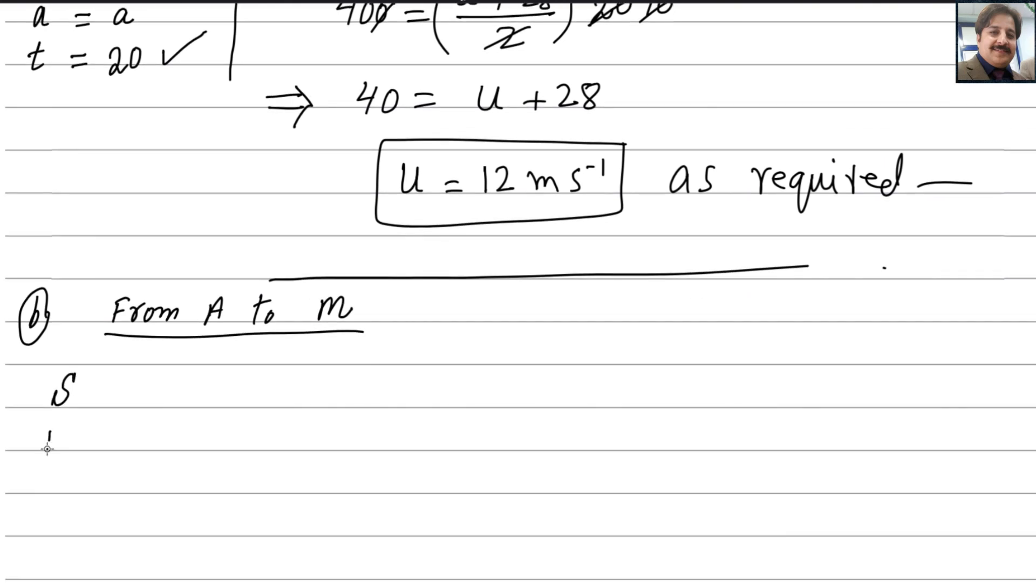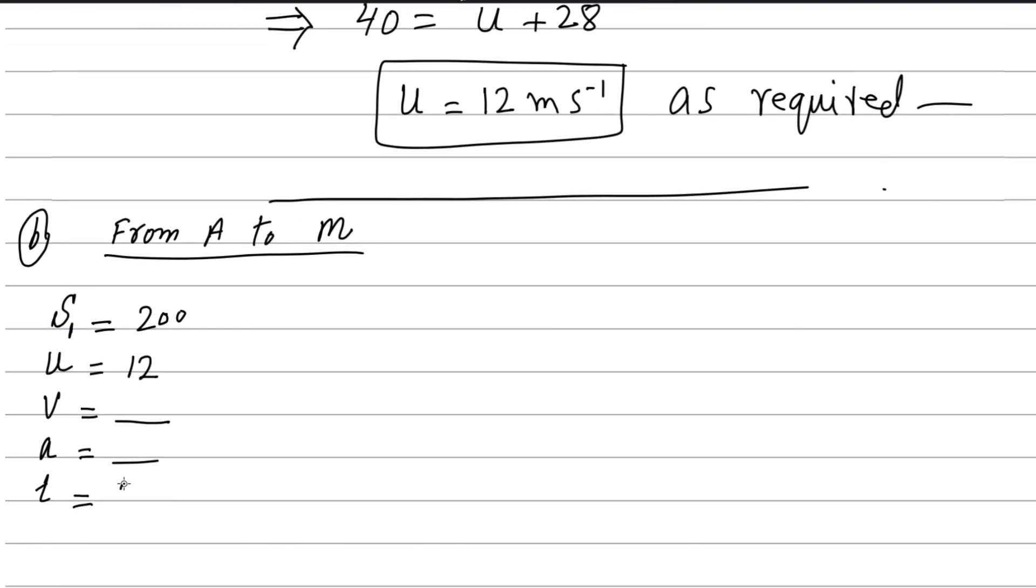We need to find time taken for this part from A to M. In these SUVAT equations there are four variables. If three are known, the fourth you can find easily. But in this part we have only two. You could find v or you could find a or t. Acceleration we could find easily from the previous, because acceleration remains constant.